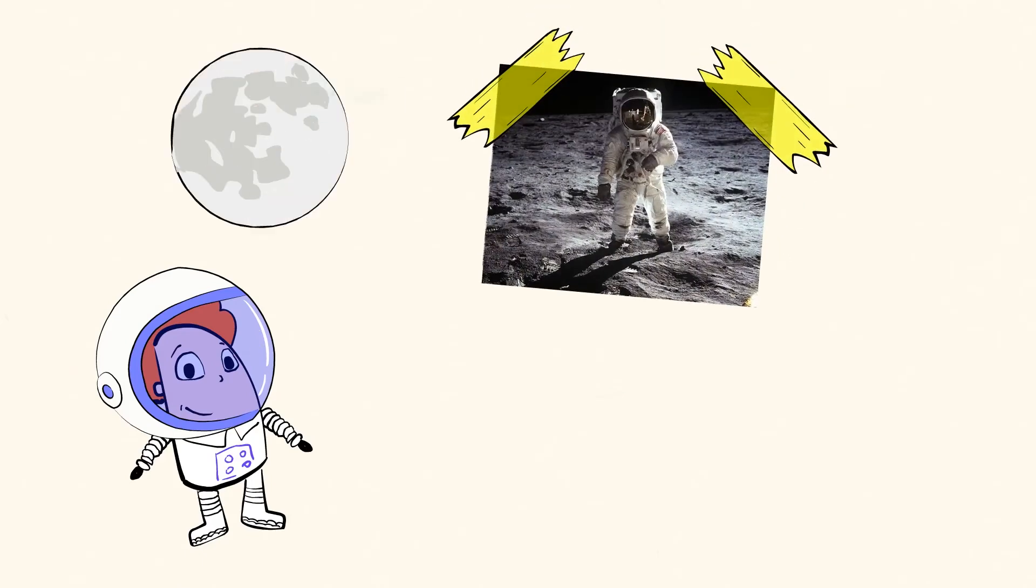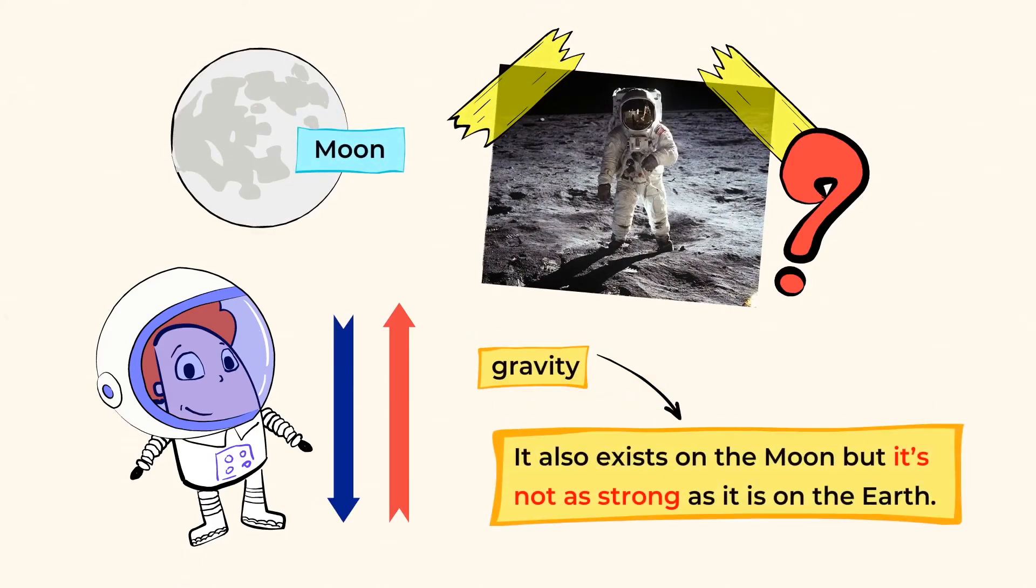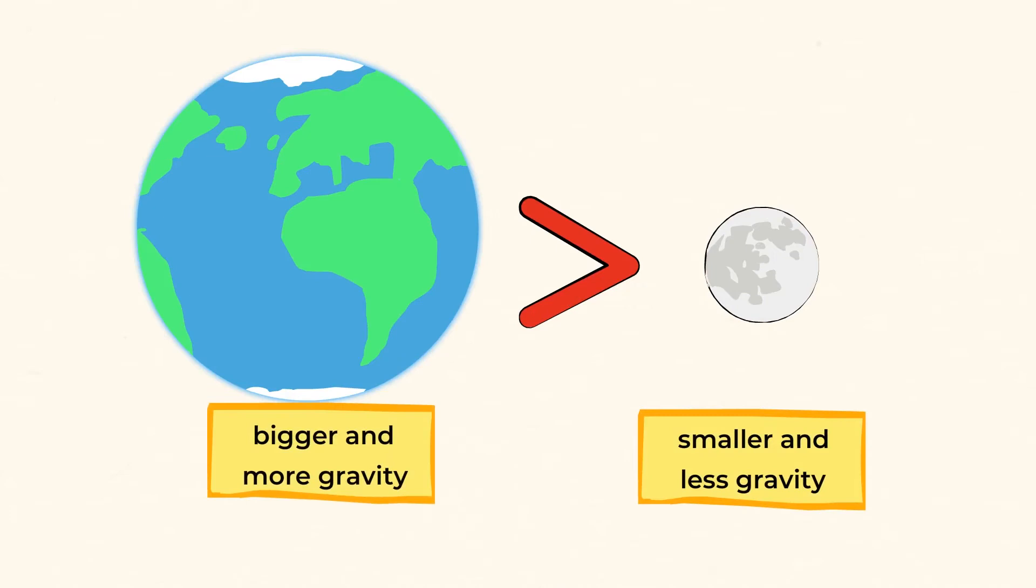What about astronauts jumping on the moon and slowly falling down? Well, gravity also exists on the moon, but it's not as strong as it is on the earth. That's why astronauts can jump higher and fall back down more slowly because the moon is much smaller than our planet and its gravity is less.